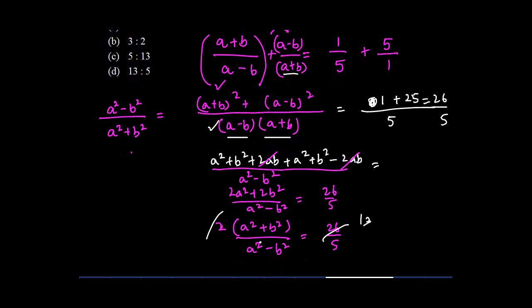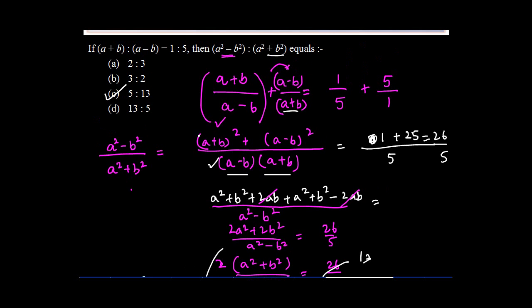So I will get (a²-b²) in the numerator—5 also moves to the numerator—(a²+b²) in the denominator, and 13 here. So 5:13 is the ratio, and hence option C is the correct answer.